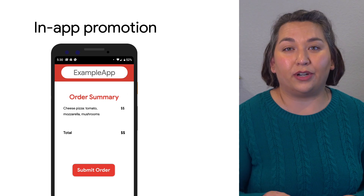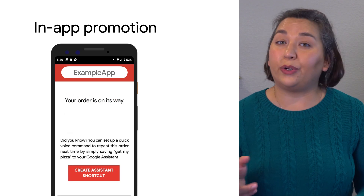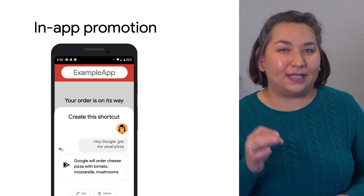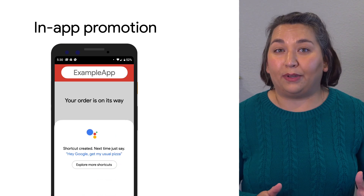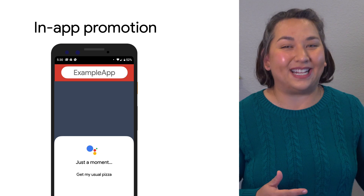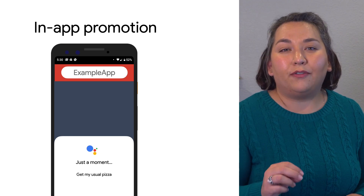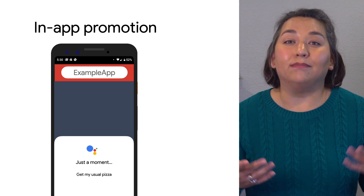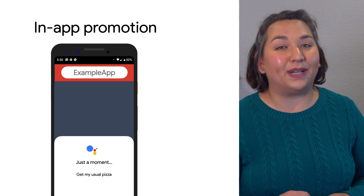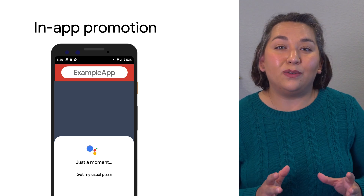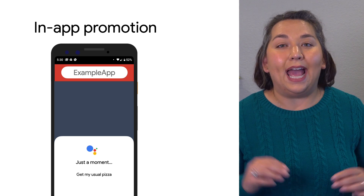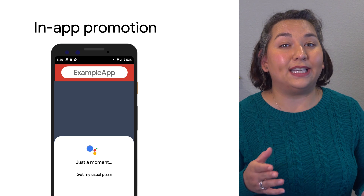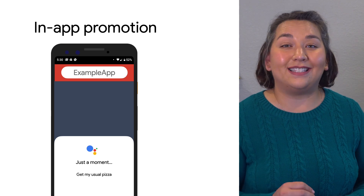For your most critical user journeys, you can suggest to your users to create an Assistant Shortcut in your app, which is a phrase that triggers a particular shortcut. For example, at the end of purchasing a pizza, you can offer the user to create an Assistant Shortcut. So the next time they say, "Hey Google, get my usual pizza," the Android app opens with the user's preferred pizza ready to be ordered. In-app promotion allows the developer to initiate the creation of an Assistant Shortcut by constructing a special deep link that has the app's own deep link parameters inside it.